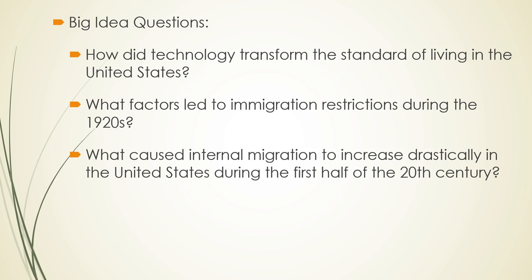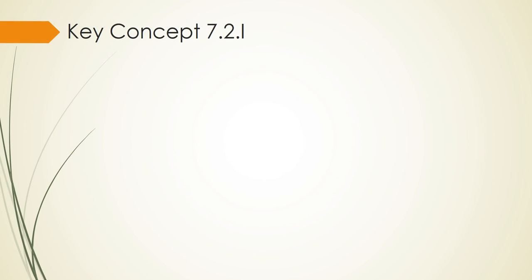Our second question: What factors led to immigration restrictions during the 1920s? We have two pretty severe restrictions, one in 1921 and one in 1924. Third: What caused internal migration to increase drastically in the United States during the first half of the 20th century, between 1900 and 1945? Those are our big idea questions for Key Concept 7.2.